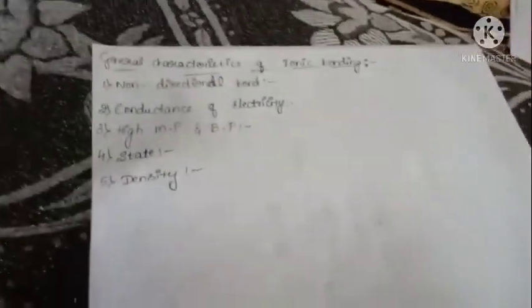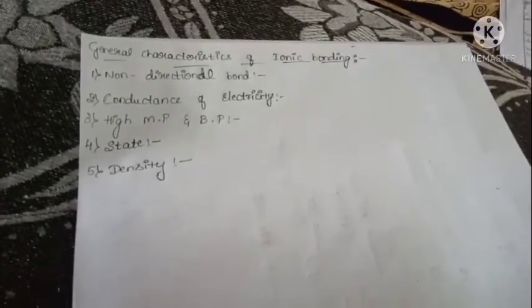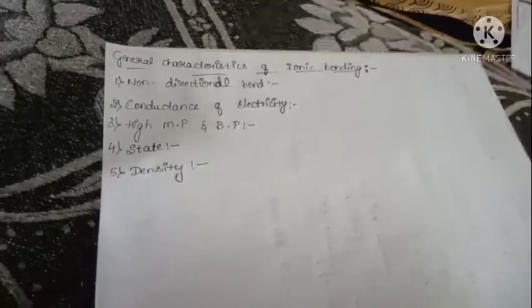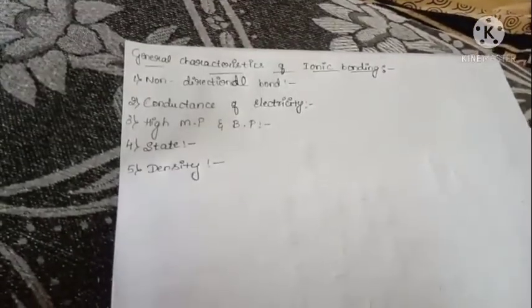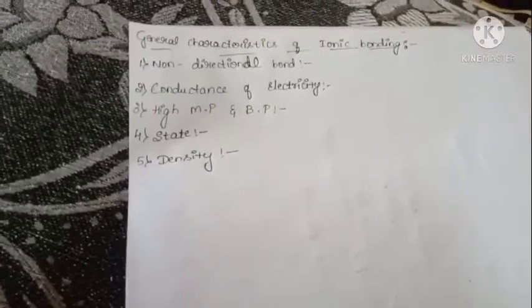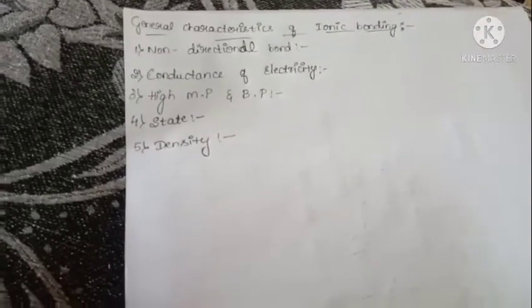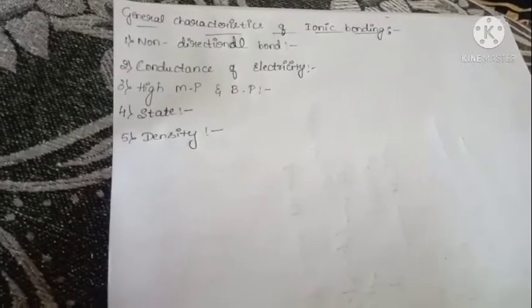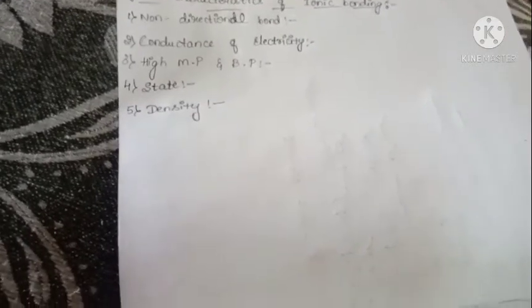Next we move on to the general characteristics of ionic bonding. There are mainly five characteristics for ionic bonding: first one is non-directional bond, second one is conductance of electricity, third one is high melting point and boiling point, fourth one is state, fifth one is density.